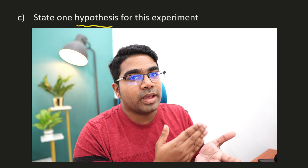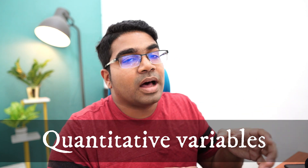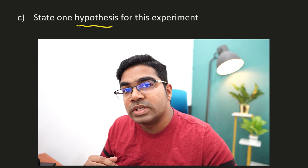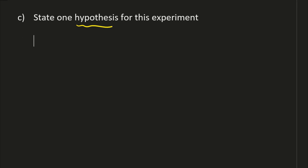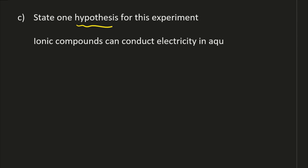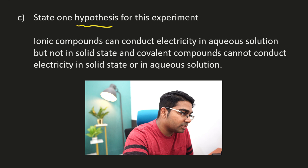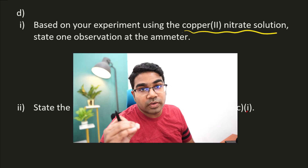In this case, we cannot use the 'when MV increases or decreases, RV increases or decreases' format because that only applies to quantitative variables. Here the variables — electrical conductivity and types of compounds — are qualitative. Therefore, the hypothesis should be the conclusion: ionic compounds can conduct electricity in aqueous solution but not in solid state, and covalent compounds cannot conduct electricity in solid state or in aqueous solution.